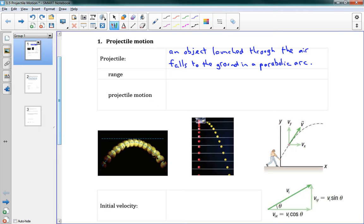And there's a few terms here. Range, range is the horizontal displacement. So range is just the name we give to horizontal displacement, and it looks like this, x displacement.